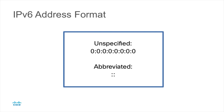One implementation of the unspecified address is in a default route. To reach any unspecified address, we send traffic to a default gateway. For example, we could enter 'IPv6 route :: <default gateway address>.' Understanding the IPv6 address format is extremely beneficial for a security analyst, as you'll be looking at packet captures carrying both IPv4 and IPv6 traffic.